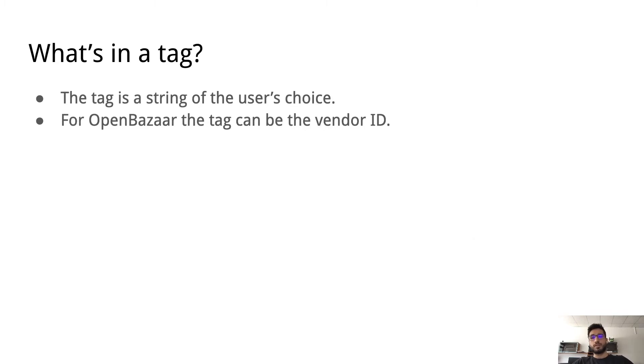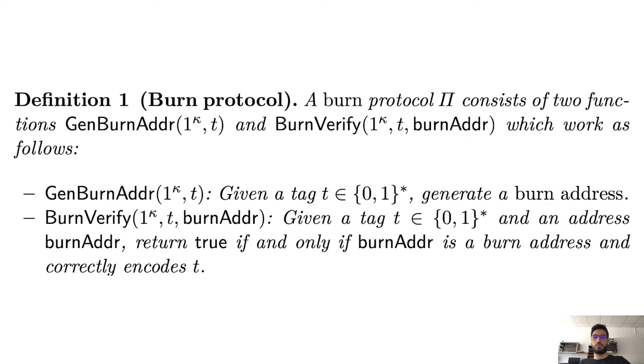Let's dive into the tag more. The tag can be any string of the user's choice, as we said. For OpenBazaar, for example, it could be the vendor ID. So if I am a vendor, the way I do the burn is I take my vendor ID from OpenBazaar, and then I generate an address with that and then burn some coins and then publish the proof on OpenBazaar, for example.